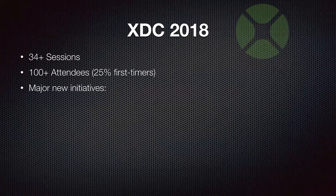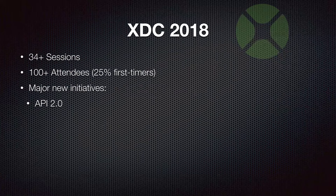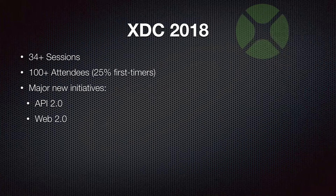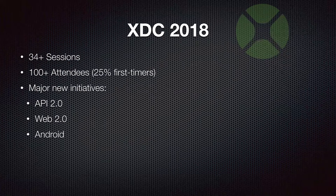During the keynote and in the sessions afterwards, a few major initiatives were brought up. The first was API 2.0, a new unification of the overall Zojo framework. Web 2.0 is the next version of the web framework for making web apps, adding lots of new controls and UI layouts to bring Zojo web apps to a more modern style since they were first introduced in 2010. And Android mobile support is the next OS target being worked on.